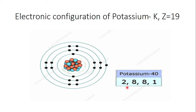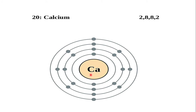So the electronic configuration of potassium is 2, 8, 8, 1. Next is calcium with Z = 20. Since the atomic number equals the number of electrons, we have 20 electrons. We write 2 in the first shell and 8 in the second shell, leaving 10 more to fill. Though the M shell can hold 18 electrons, since it would be the last shell it cannot hold more than 8, so we write 8 in the M shell and take the remaining 2 to the N shell.